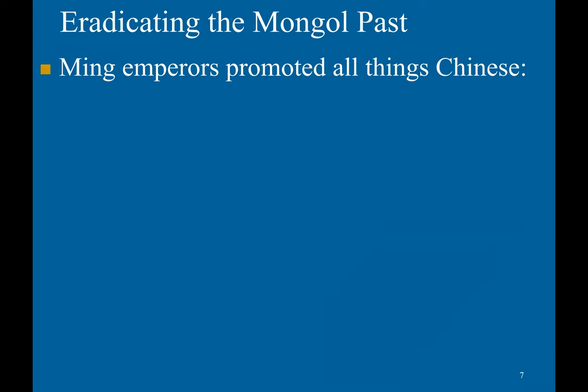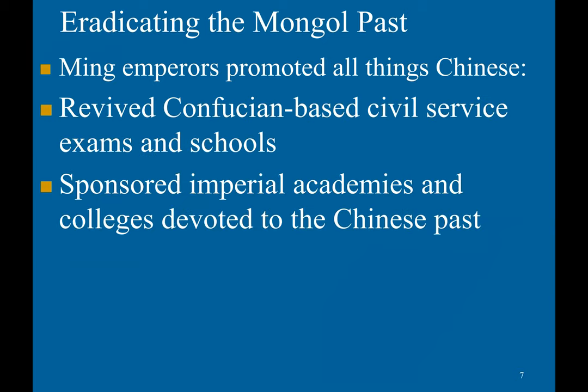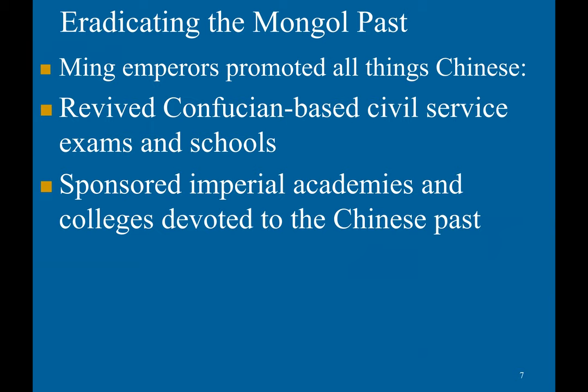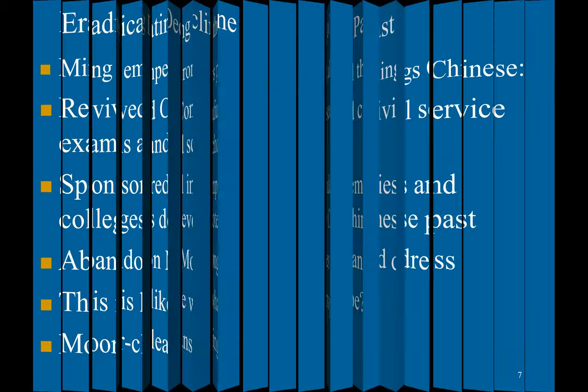In order to eradicate the Mongol past, Ming emperors promoted all things Chinese. They provided Confucian-based civil service exams and schools, sponsored imperial academies and colleges devoted to the Chinese past, and abandoned Mongol names and dress. This is almost like denazification in Europe, or the Moorish cleansing in Spain.